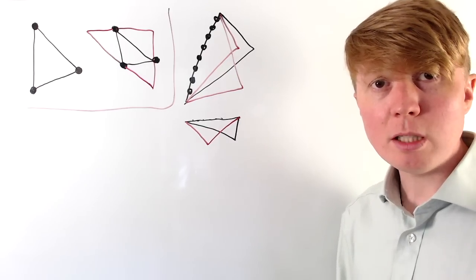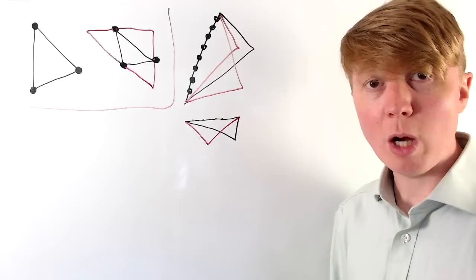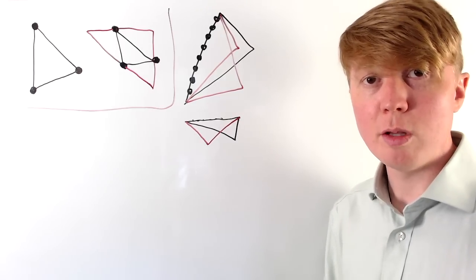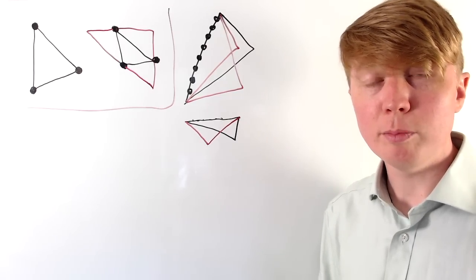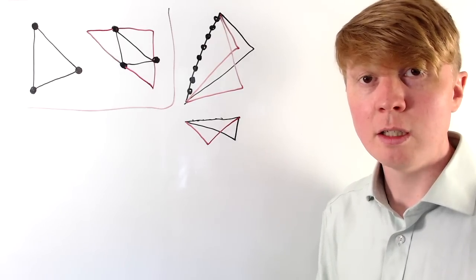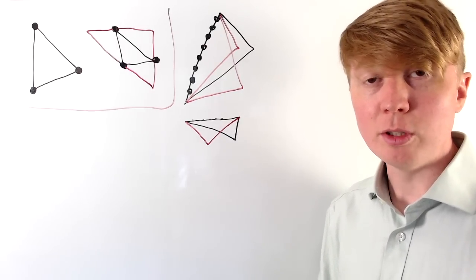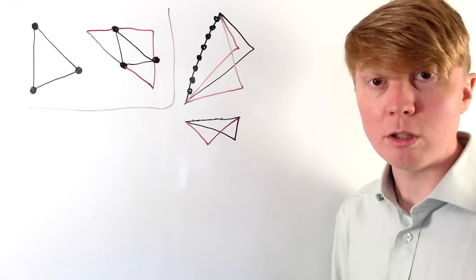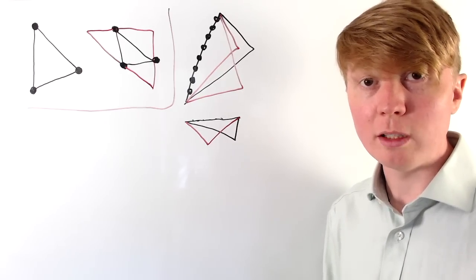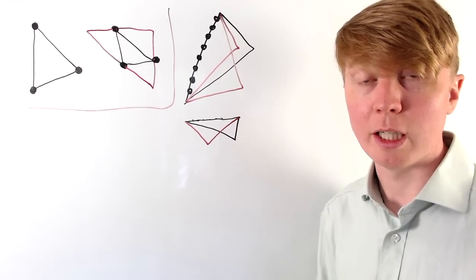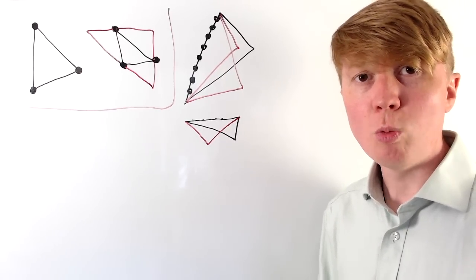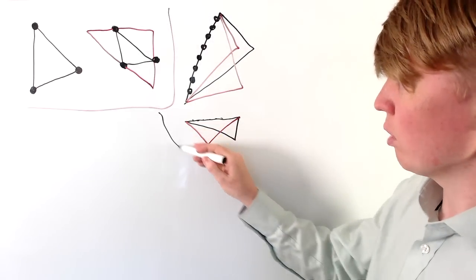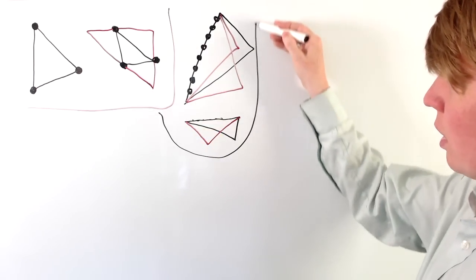So perhaps we need to ask a slightly different question. The question we'll try to answer is: what is the minimum number of points you need to be able to define a unique triangle? Not that those points will always define a unique triangle, but that with that number, it is possible to define a triangle uniquely.